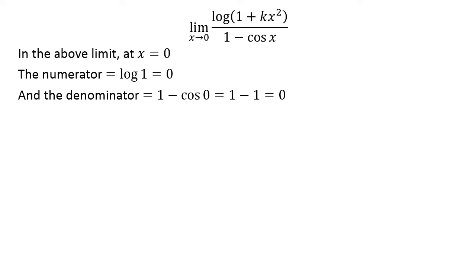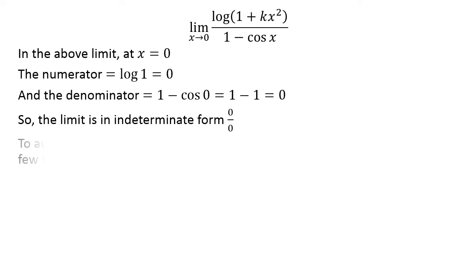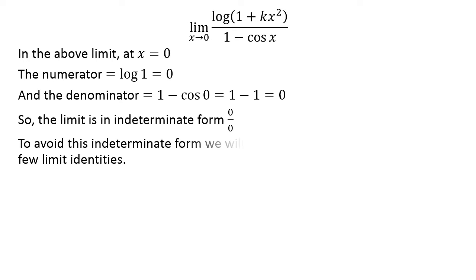At x is equal to 0, the numerator is equal to 0 and also the denominator is equal to 0. This implies that the limit is in 0 upon 0 indeterminate form. We will avoid this indeterminate form by application of a trigonometric identity and a few limit identities.